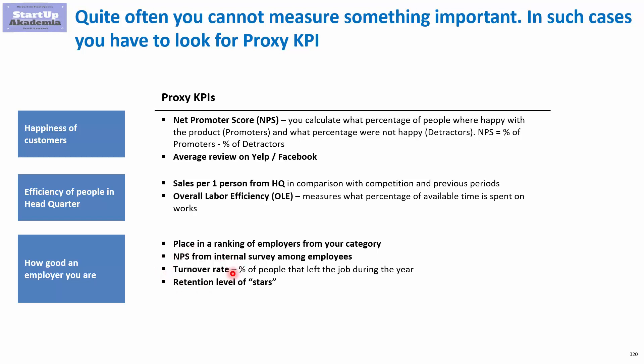Another way to estimate it very indirectly is to look at the turnover rate — if it's high then it means that people are not satisfied with how good you are as an employer, so you might be either not creating the right culture or simply underpaying. And finally, retention level of the so-called stars or best employees: if it's low then it means that you are not attractive as an employer.